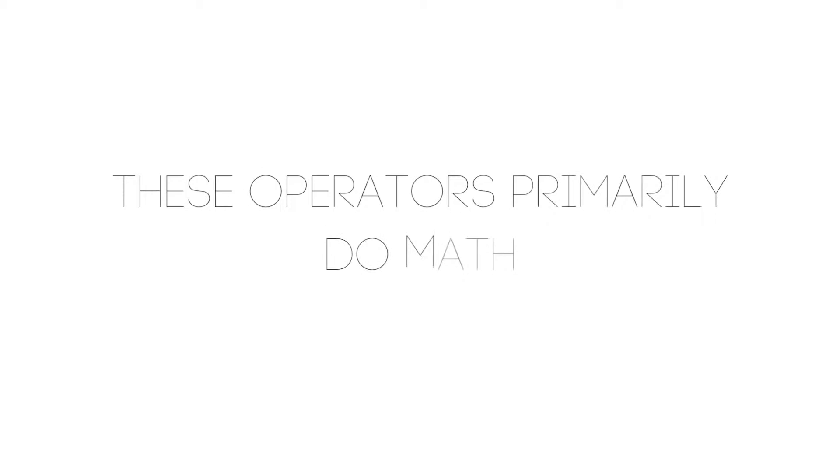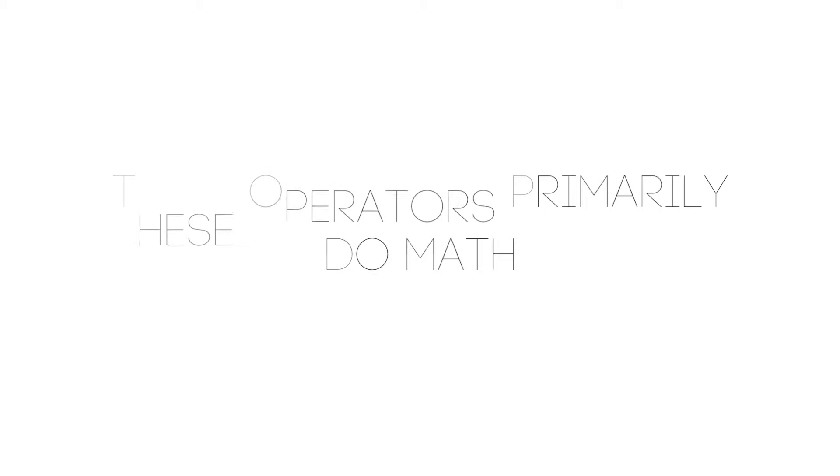The arithmetic operators will take in numerical values, run some arithmetic on them, and return a single value. At the most basic definition, these complete mathematical operations. Some of the operators can do more than that, but let's keep it fairly simple for this definition.